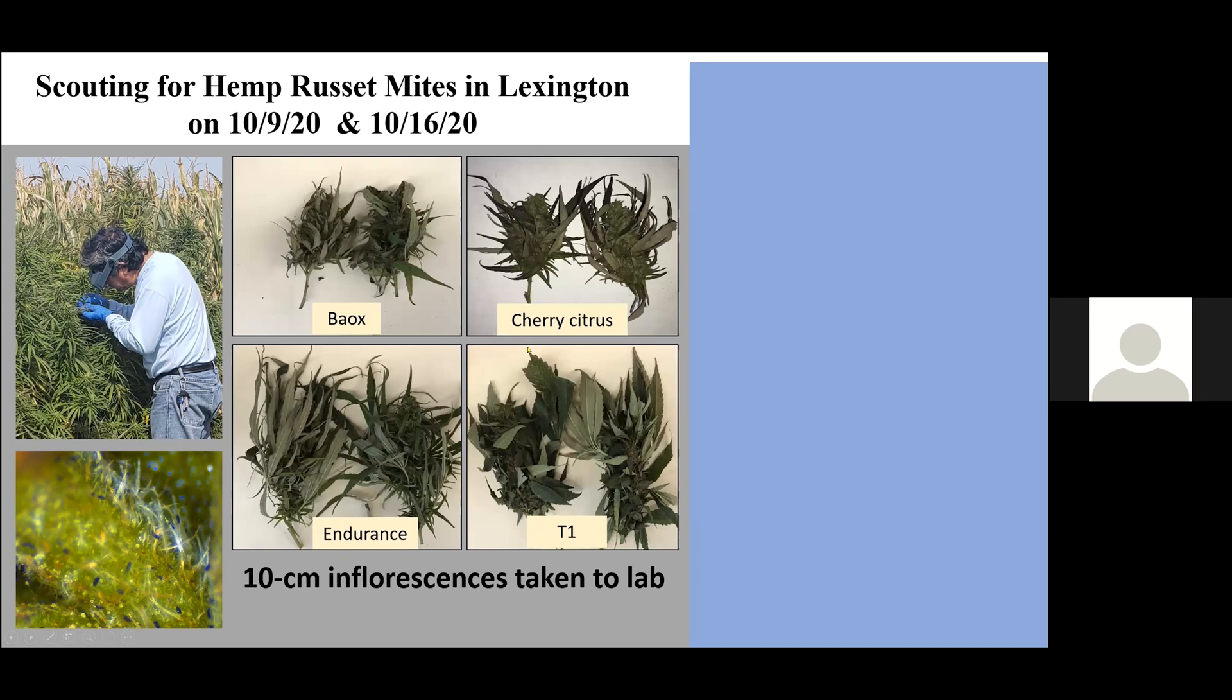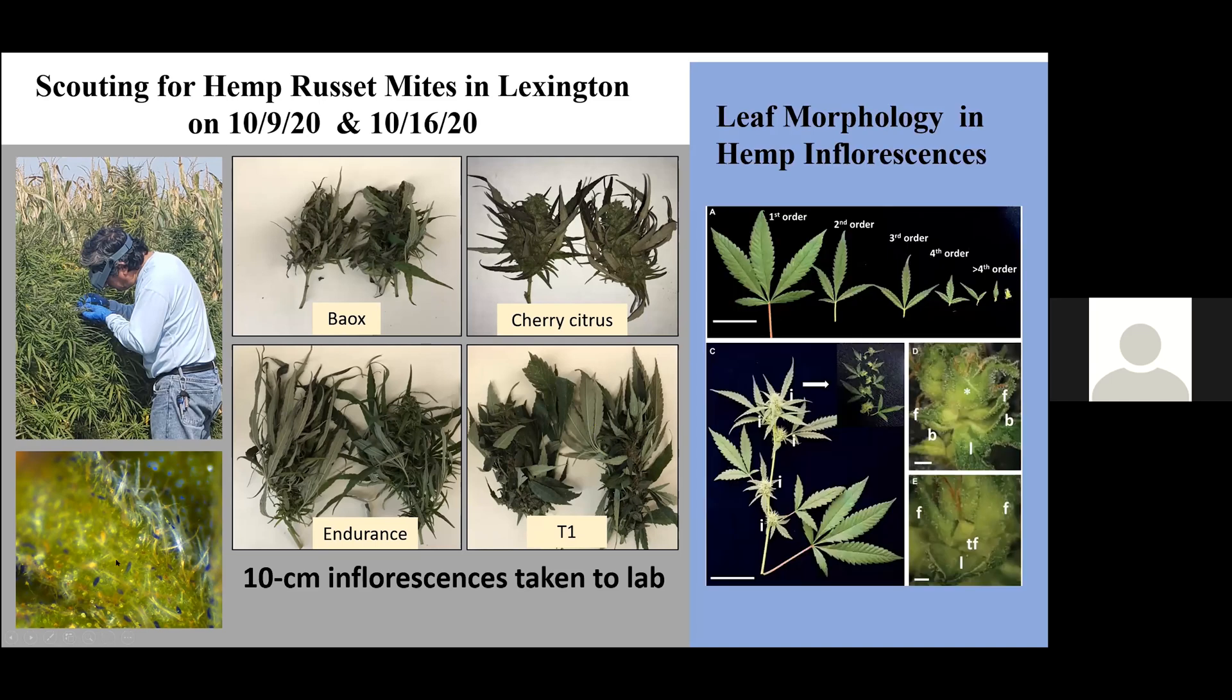Once in the laboratory, we noticed that most of the damage or most of these russet mites were present in the inflorescence rather than in the leaves. Furthermore, these inflorescence have a kind of leaf morphology that's very particular. They have leaves of first order, second order, and third order. So we decided to evaluate these ones.